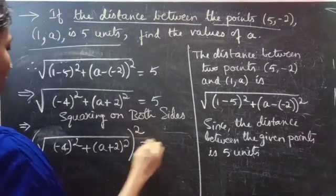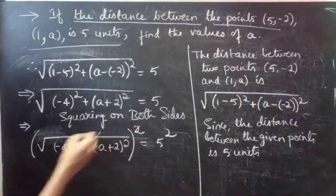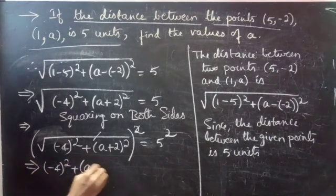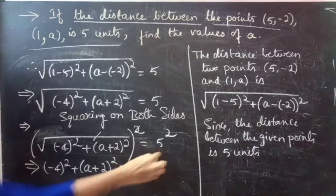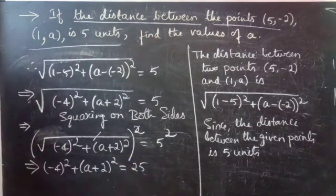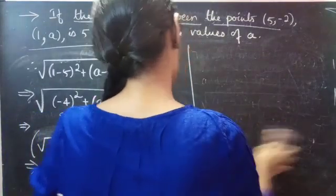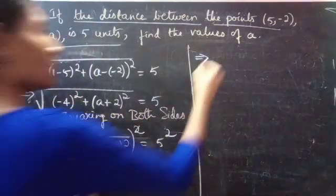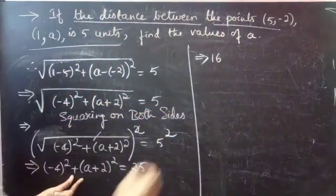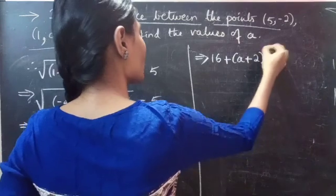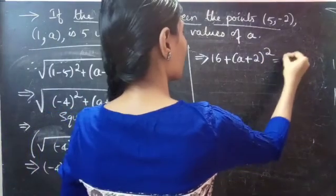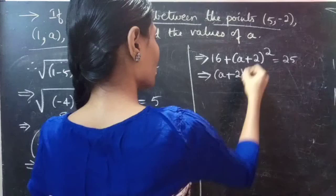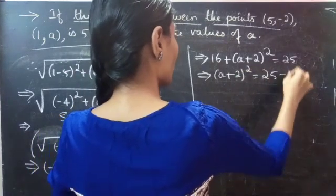Since we are squaring on both sides, the square and root get cancelled. So we get: minus 4 whole square plus (A plus 2) whole square equals 5 square, which is 25. This implies minus 4 whole square is 16. Taking 16 to the right hand side, we get (A plus 2) whole square equals 25 minus 16.